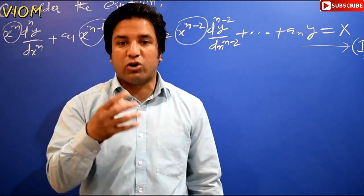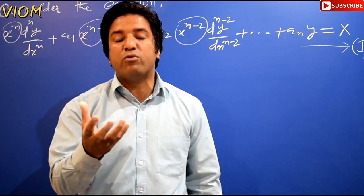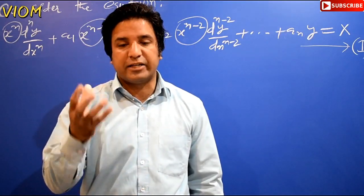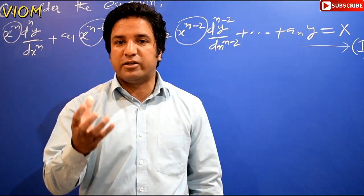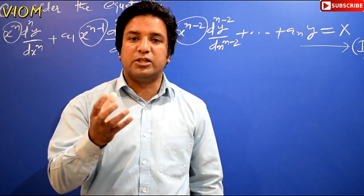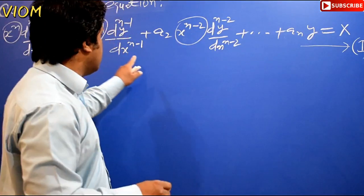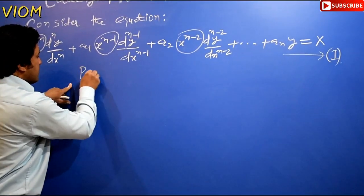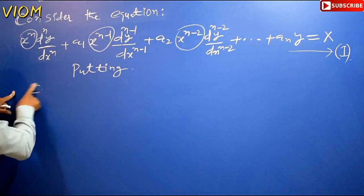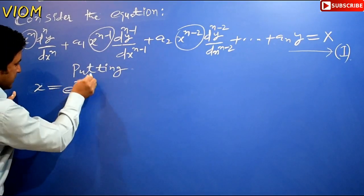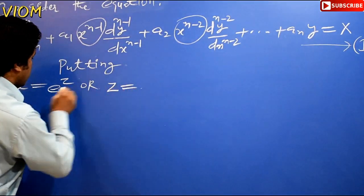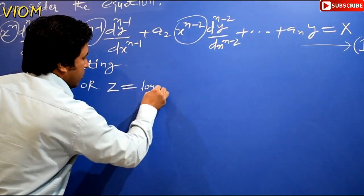To perform this conversion, you have to apply a transformation by putting and substituting a value. The method given for Cauchy's homogeneous linear differential equation uses the substitution: x equals e raised to the power z. Equivalently, we can write z equals log of x, by transferring the exponential to the other side.